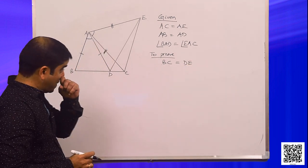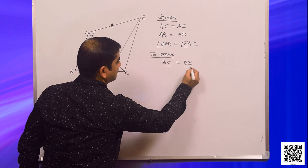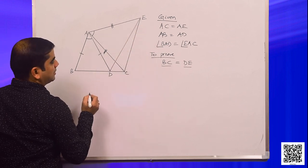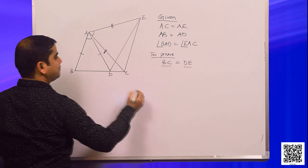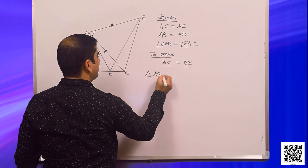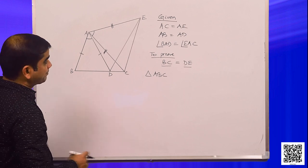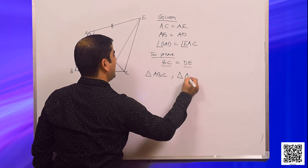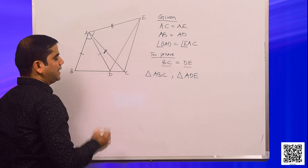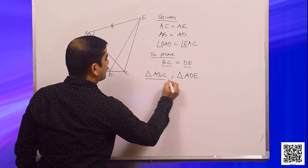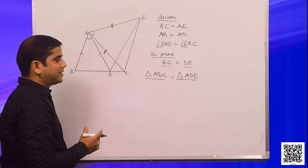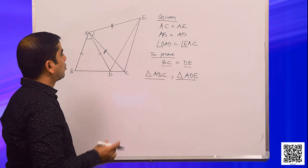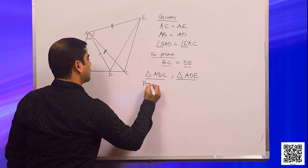Let us first check where these two sides lie. BC is one of the sides of triangle ABC, and DE is one of the sides of triangle ADE. So if we can prove that these two triangles are congruent, then it will be proved that BC is equal to DE because they are corresponding sides.